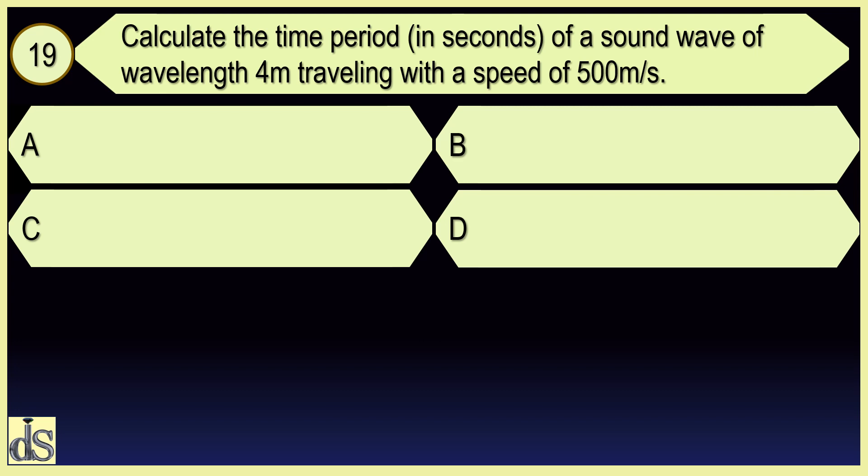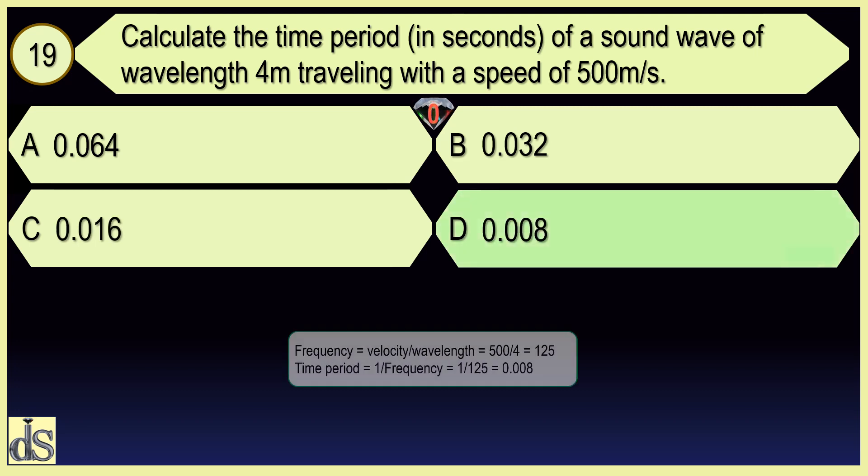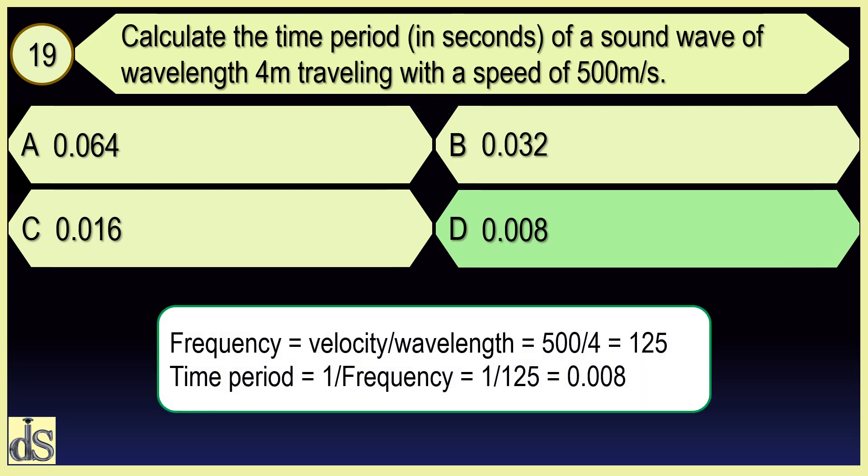Calculate the time period in seconds of a sound wave of wavelength 4 meter traveling with a speed of 500 meter per second. 0.008.